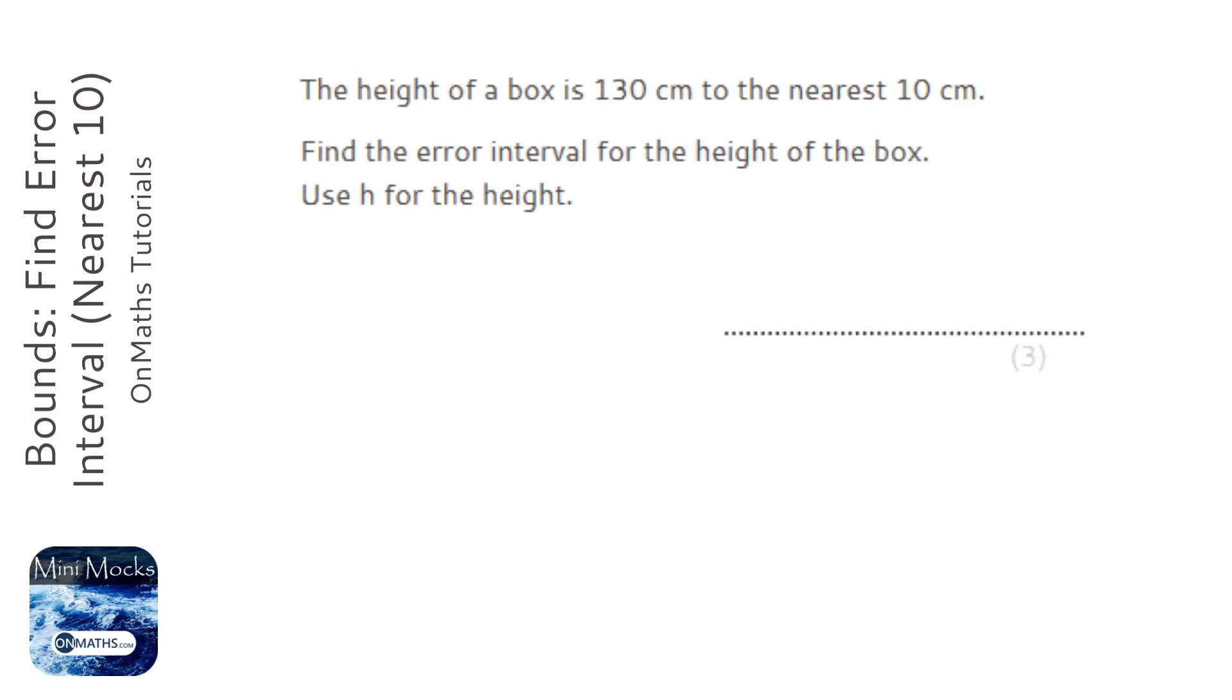The way to do this question is to draw a quick number line. We're going to put 130 in the middle. Now it's the nearest 10, so I'm thinking what would the next one down be, where if we had slightly less, if we had 128, it would still round to 130.